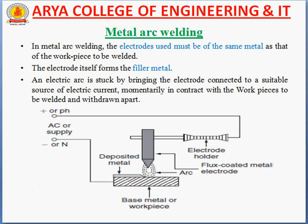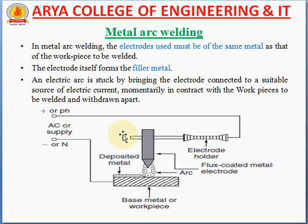Now, metal arc welding. In metal arc welding, the electrode used must be of the same metal as the work piece to be welded. These are called metal arc welding; the electrode itself acts as the filler metal. An electric arc is struck by bringing the electrode, connected to a suitable source of electric current, momentarily in contact with the work piece and then withdrawn apart.